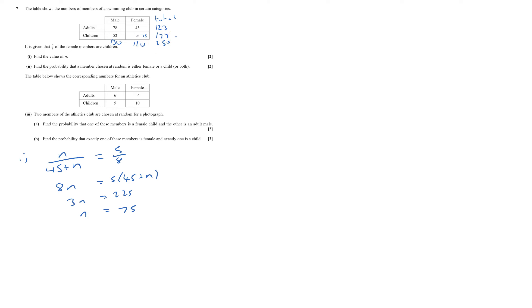I don't know if I need it. If writing the probability of a member chosen at random is either a female or a child or both, well that basically means it's not a male adult.